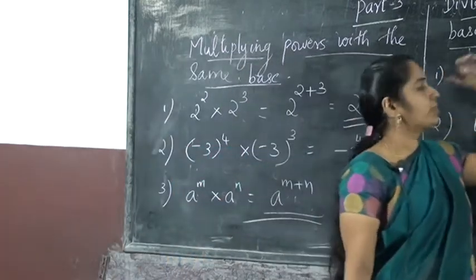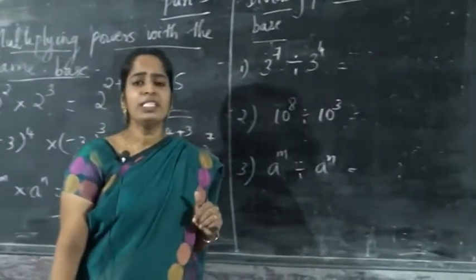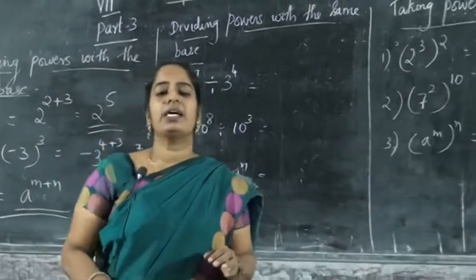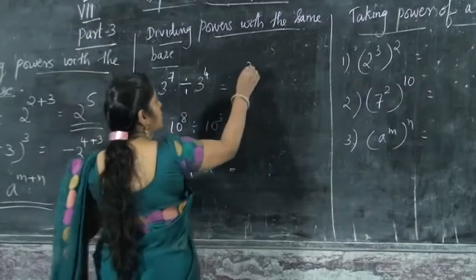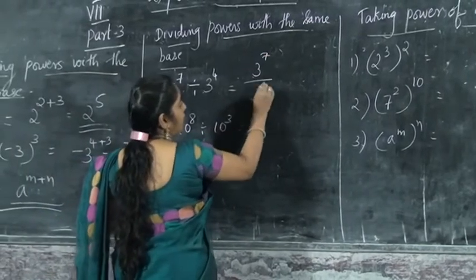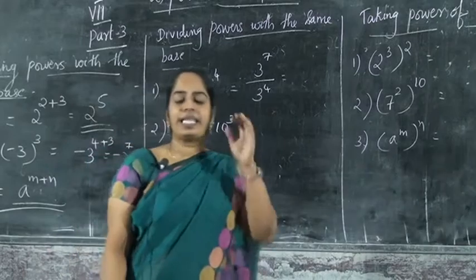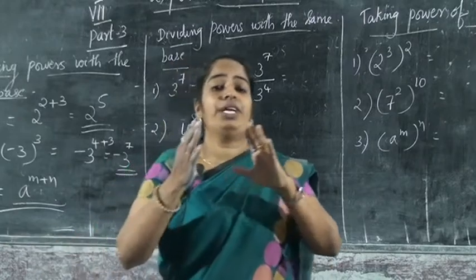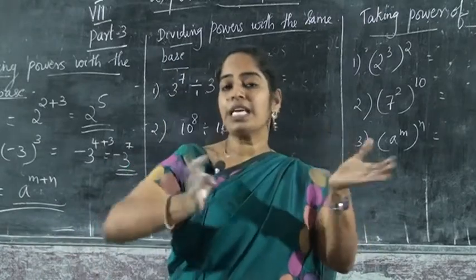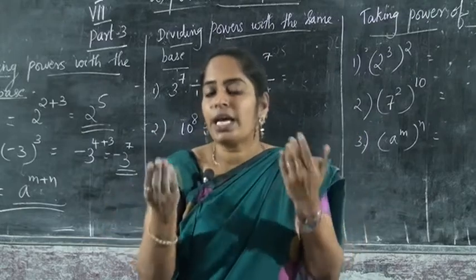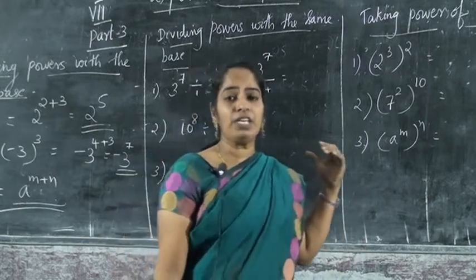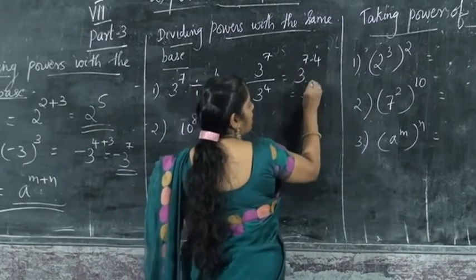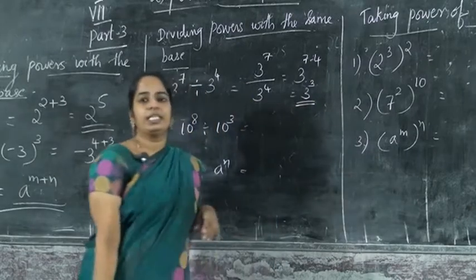Next we can go to dividing powers with the same base. What is dividing powers with the same base? Here also there is division, but the same base. Base is the same. So here 3 raise to 7 by 3 raise to 4. Base is 3, the same, but powers are different. If it is multiplication, we add the powers. But here it is division, so we must do subtraction: 7 minus 4, that is 3. So the answer is 3 raise to 3.